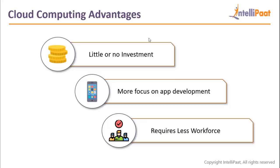Second advantage: more focus on app development. You can focus on building your app rather than worrying about whether your infrastructure is fine, how traffic is coming in, or whether it's scalable — everything is managed by AWS once you configure it correctly. Third advantage: it requires less workforce. If you're buying your own servers, you obviously need a team to manage them, handle hardware upgrades, and apply security patches. But with a cloud provider, all of that is their responsibility.